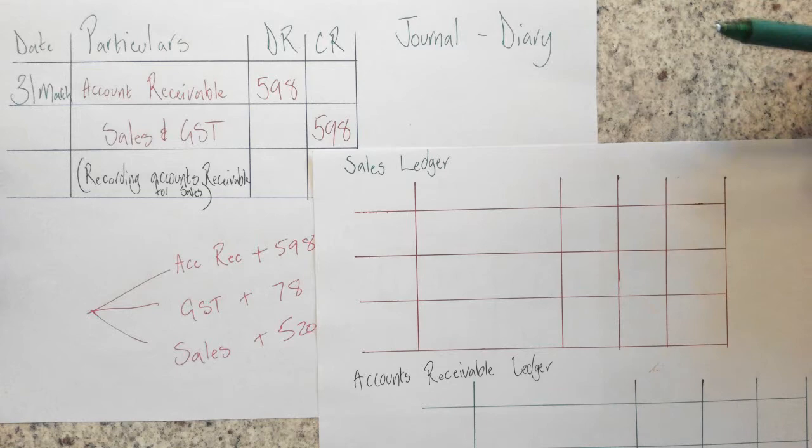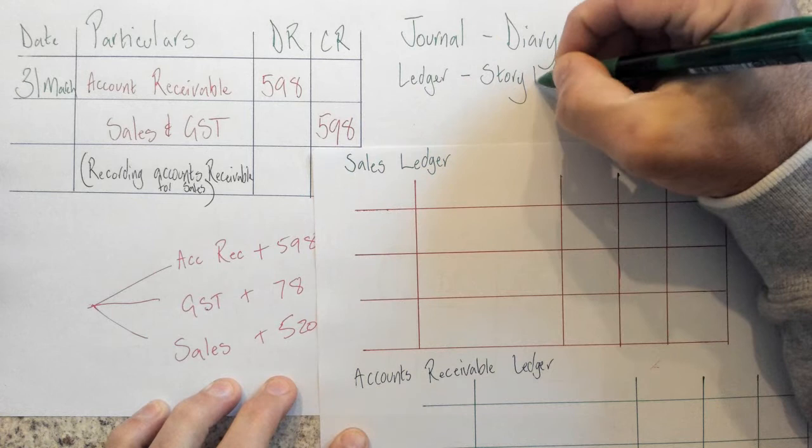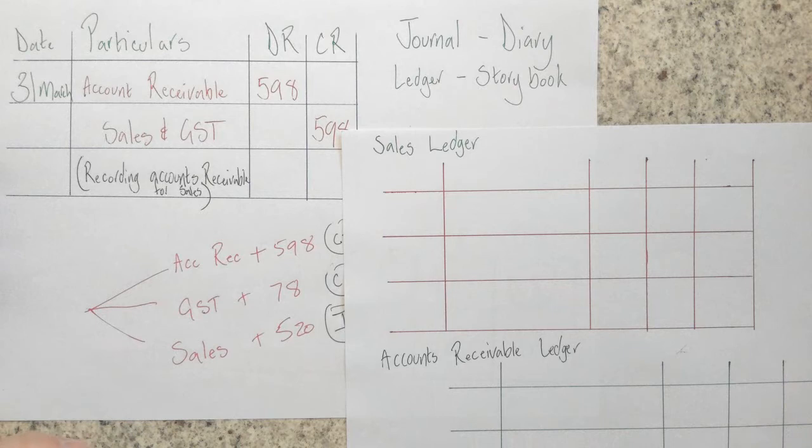So I'm going to do the sales ledger and also the accounts receivable ledger. In the last video I identified that the journal was like a diary entry and every day we update our diary or journal with every single event that's happened. Whereas this time the ledger is something slightly different.